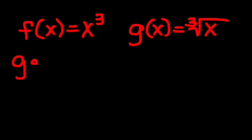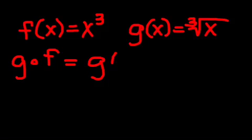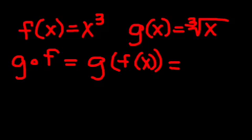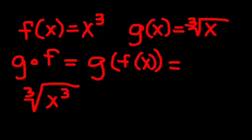I'm going to do the g composed of f. So what that means is I'm going to take the function g of x, which is the cubed root of x, and I'm going to plug in the f of x, which is x cubed. So that means I'm going to take x cubed, and I'm going to take the cubed root of it. When I take the cubed root of x cubed, that's equal to x. These are inverses of each other. Anytime you get x, when you take the composition, they're inverses of each other.